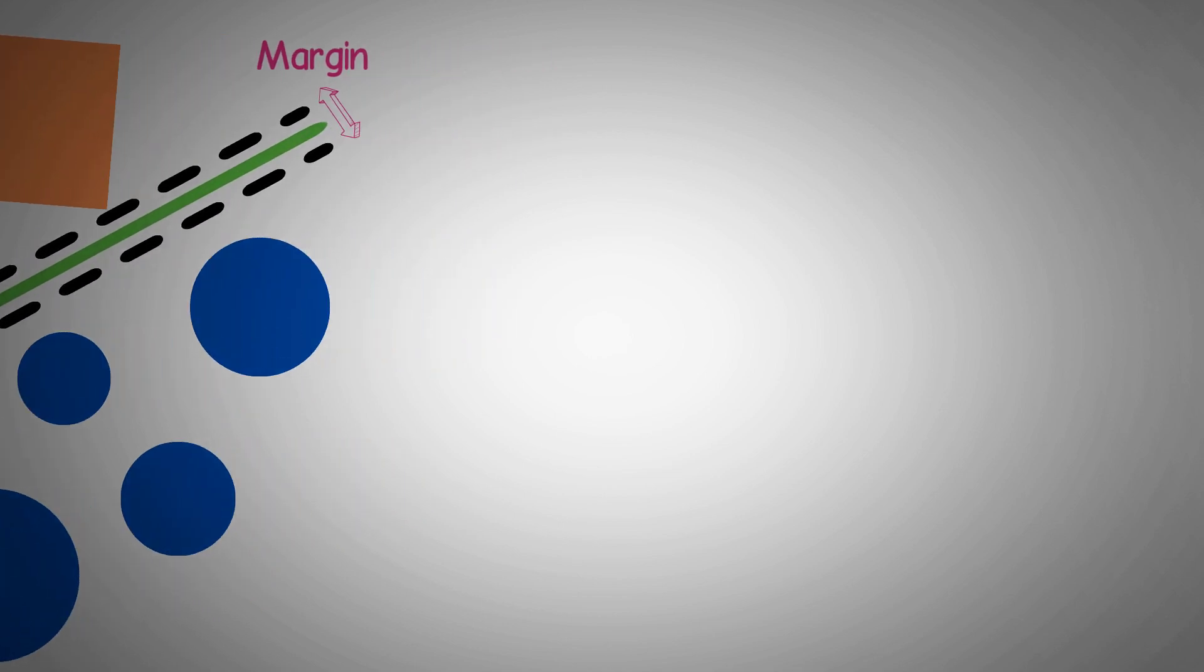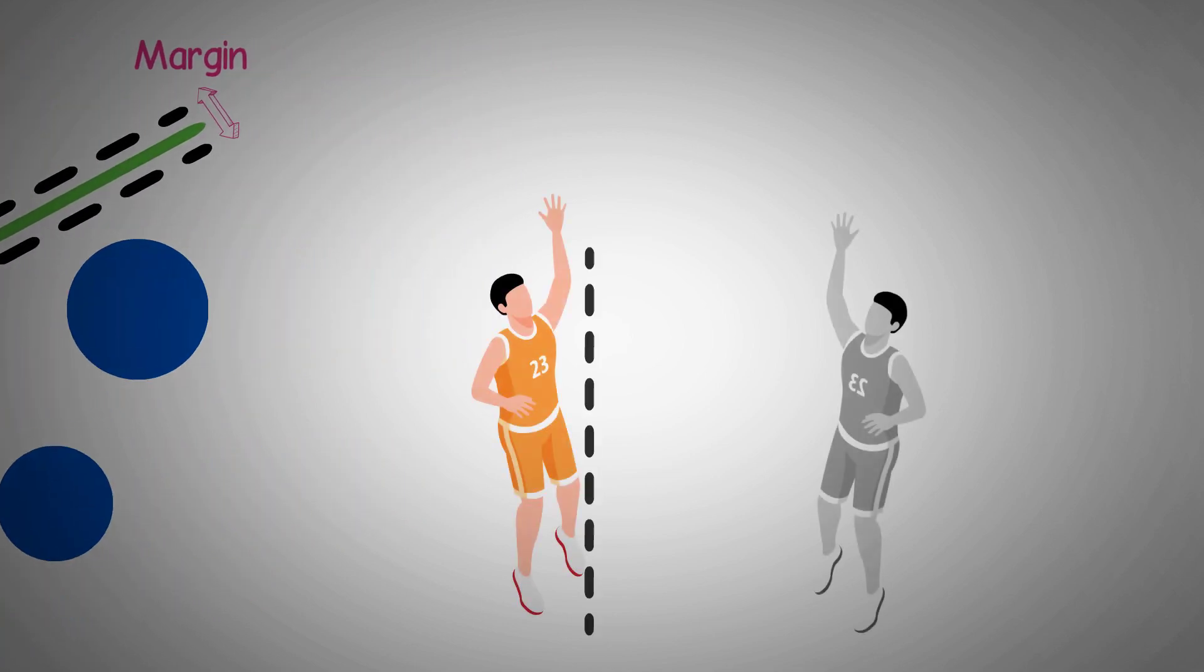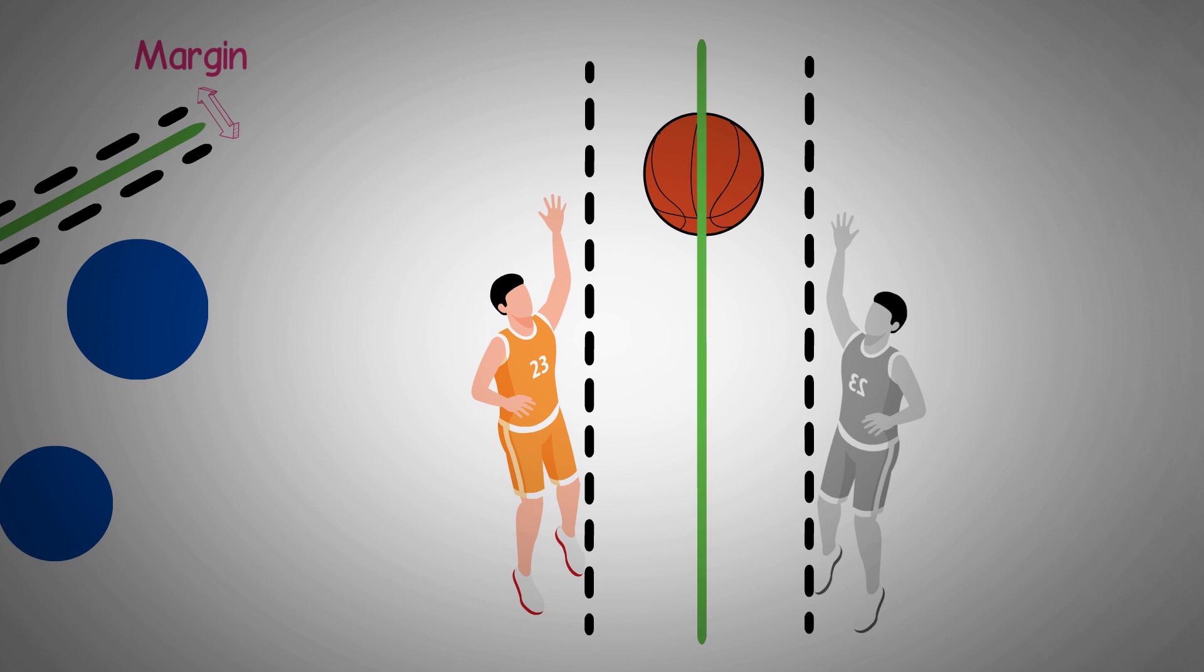Think of it like a referee drawing the boundary lines on a sports field so that the players from the two teams stay clearly apart from each other. The wider the boundary, the better, and the clearer the separation.